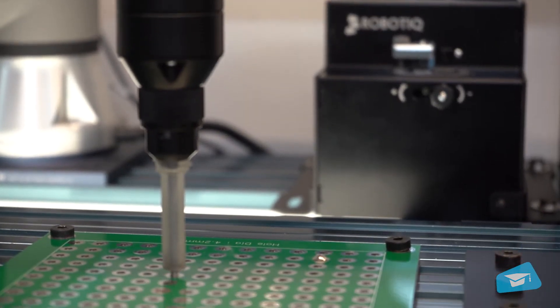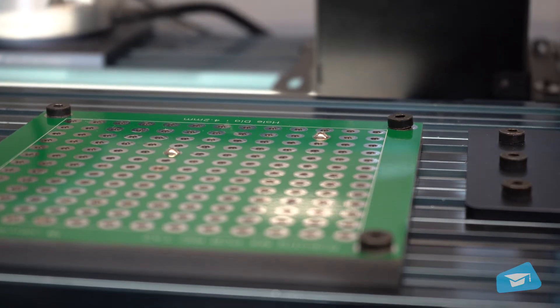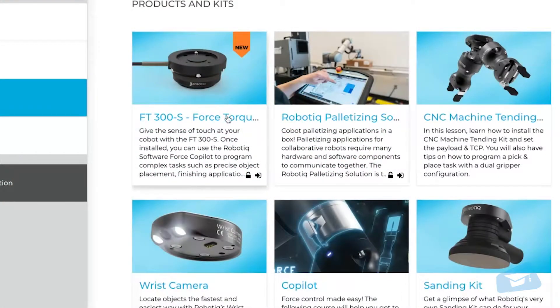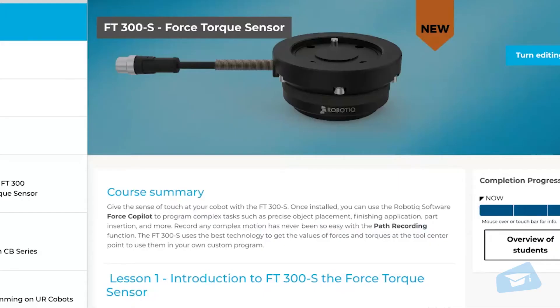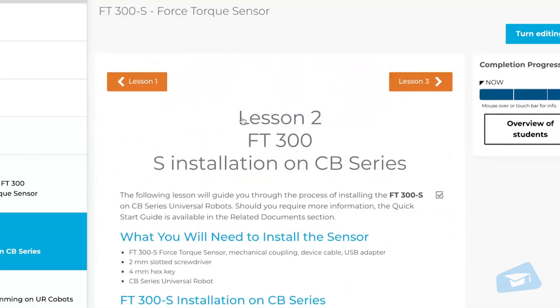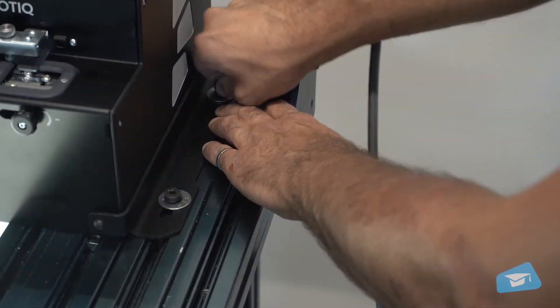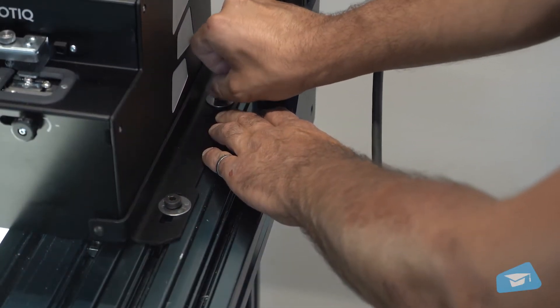In this video, we will simply demonstrate how to install the screwdriver on an E-Series robot. If you have a CB-Series robot, please refer to the FT300S lessons to learn how to install this additional component. Instructions about the screw feeder's installation will follow further in this module.